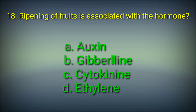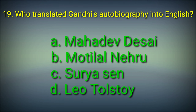18th question: Ripening of fruits is associated with the hormone — Options: A. Auxin, B. Gibberellin, C. Cytokinin, D. Ethylene. Answer: Option D. Ethylene. Ripening of fruits is associated with the hormone ethylene.